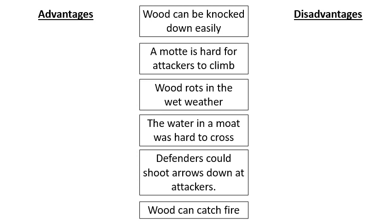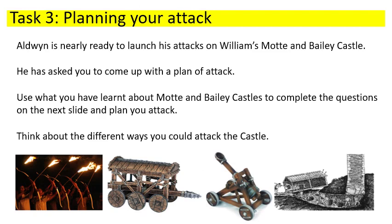Fourth: 'The water in a moat was hard to cross' - that's a disadvantage, as you have to get your weapons and troops over that water surrounding the castle. Fifth: 'Defenders could shoot arrows down at attackers' - definitely a disadvantage, because they are above you and you are easy prey for their archers. Sixth: 'Wood can catch fire' - that is a big advantage, giving you a great idea of what you could do. Make sure you've got those in the right columns - you should have done most of them right anyway because you guys are super smart!